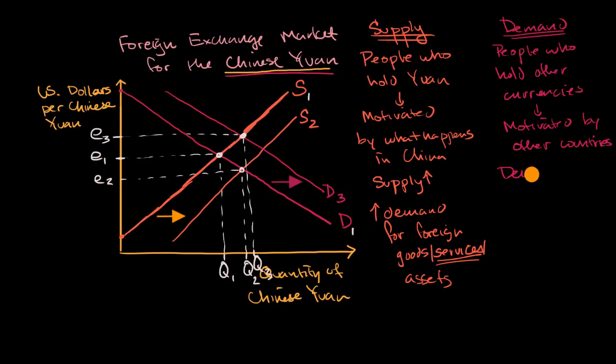So demand for yuan would go up if you have an increase in demand for Chinese goods from foreigners—Chinese goods, actually I should say services, services or assets. So if you have an increase in the number of Americans who were holding dollars or are holding dollars and saying, hey, I could get a better return if I invest in China. Maybe it's growing faster.